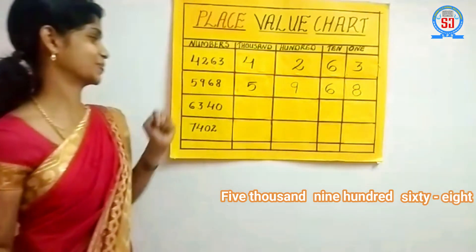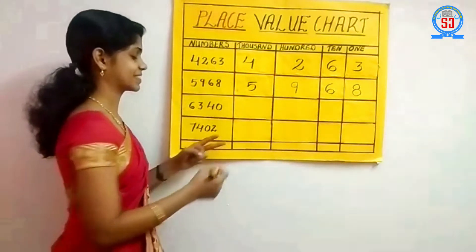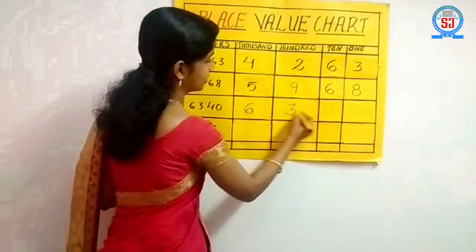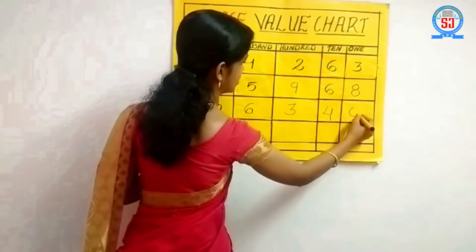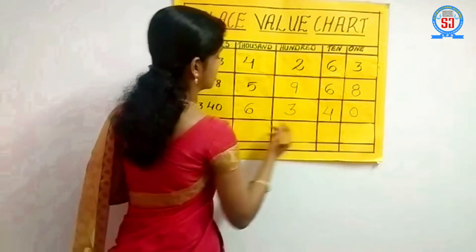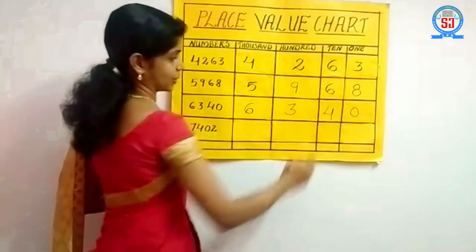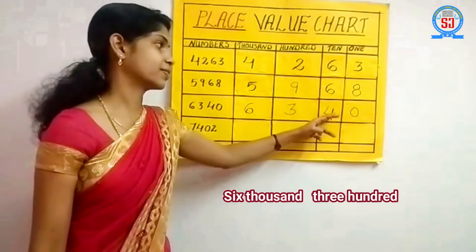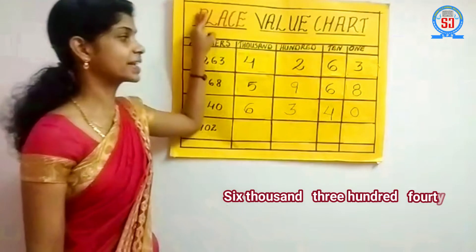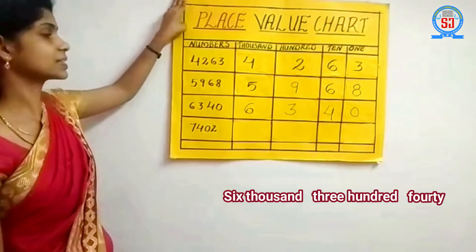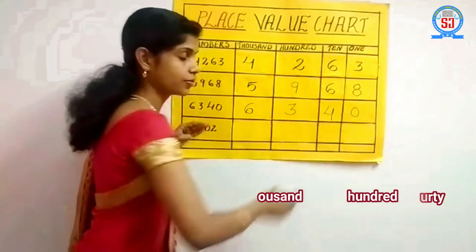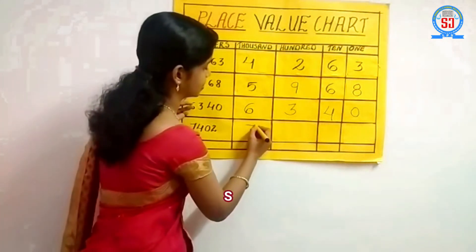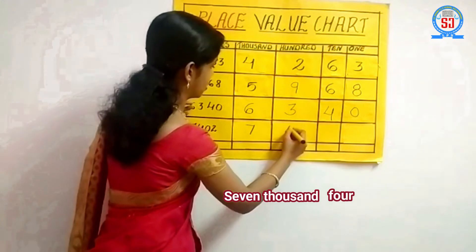Sixty-eight. Very good. Then let's read the next number: 6, 3, 4, 0. Six, three, four, zero — how will we read? Six thousand three hundred forty. There is a zero in the place of ones, so we read ten and ones together as forty.